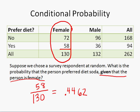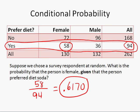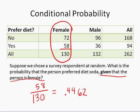Let's contrast that with what we just did. Just a minute ago we found the probability that someone was female given that they preferred diet soda — a different group we were drawing from. This time we picked the diet soda preferrers out of the females.